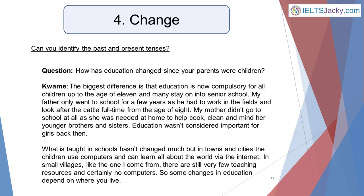Next on our list are questions about change. These generally ask you to talk about the past and the present. For example: How has education changed since your parents were children? Here's a sample answer from Kwame. The biggest difference is that education is now compulsory for all children up to the age of 11, and many stay on into senior school. My father only went to school for a few years, as he had to work in the fields and look after the cattle full time from the age of 8. My mother didn't go to school at all, as she was needed at home to help cook, clean and mind her younger brothers and sisters. Education wasn't considered important for girls back then.